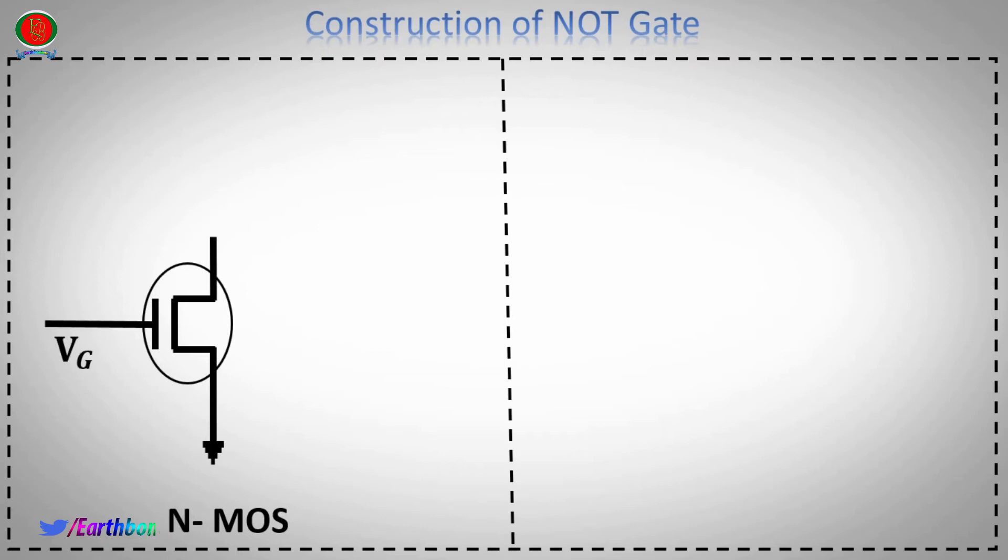The MOSFET is a 3-terminal device with gate, load resistor, and VDD power supply.